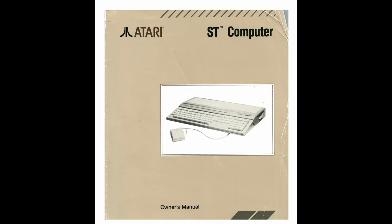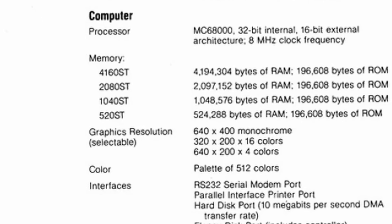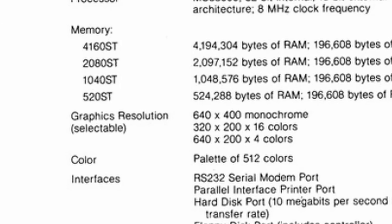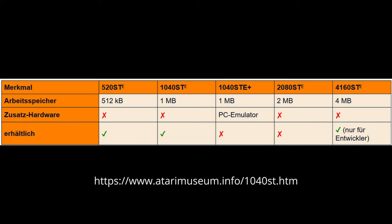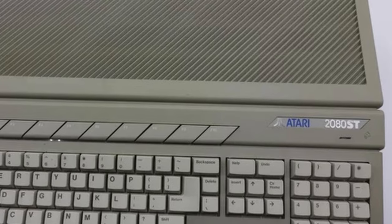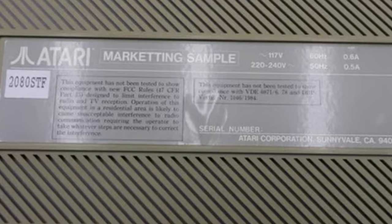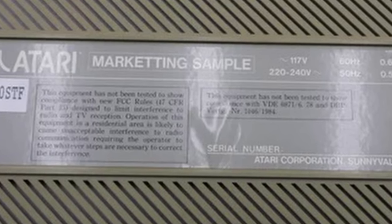Looking at the manual, I found in the appendix mention of a 2080 ST as well, which was basically the same thing. On the atarimuseum.info site — a German site about Atari computers — it says this was never sold and was only for developers. But it turns out there were also marketing prototypes sent out to people, so some models of that do exist. The correct wording now is probably not 'product' and not 'prototype' — it's actually a 'marketing sample.'